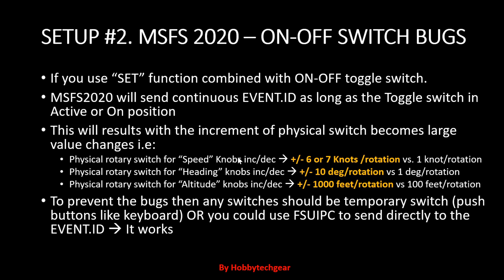When using a toggle switch directly, the knob for speed increases by far more than expected — not 10 knots, but much more — and heading changes by 10 degrees, and altitude can no longer increment or decrement by 100 anymore using a physical rotary switch. To prevent this, you need to simulate a temporary switch like a push button through FSUIPC.